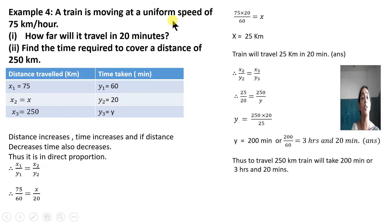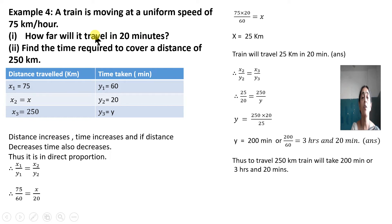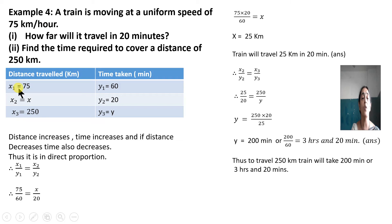A train is moving at a uniform speed of 75 kilometers per hour. Two questions are asked: how far will it travel in 20 minutes, and find the time required to cover a distance of 250 kilometers. Here there are three values — X1, X2, X3, Y1, Y2, Y3. The first given is 75 kilometers per hour, meaning in one hour the train travels 75 kilometers. So X1 is 75 and Y1 is one hour, which equals 60 minutes. The first question asks how far in 20 minutes, so Y2 is 20 minutes and X2 is unknown.